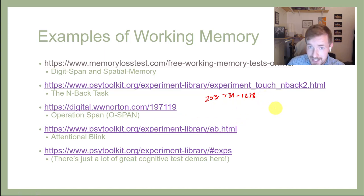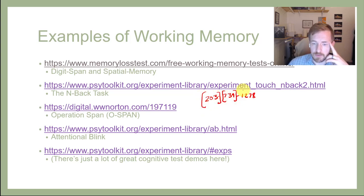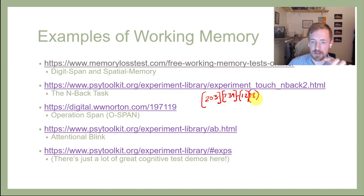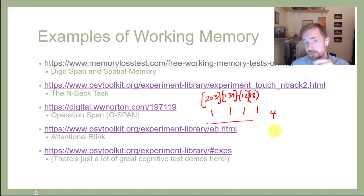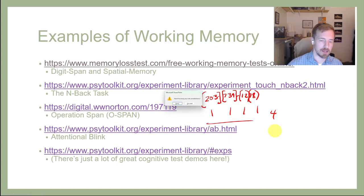The way we remember ten numbers like 2-0-3-7-3-9-1-2-7-8 is that we chunk them together into units. Instead of ten separate digits, we might say 203, 739, 12, 78 — and now we've made four items. Those four items will fit in your working memory because our working memory can hold at least five items at a minimum.